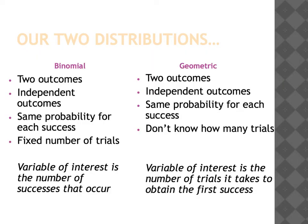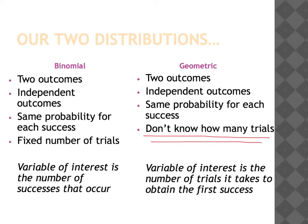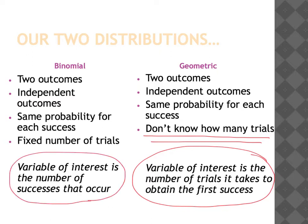We've spent quite a bit of time this chapter talking about the binomial distribution, which has four requirements. In the geometric case, there are similarly two outcomes — failure and success — the outcomes are independent, and we have the same probability for each success. But the big difference is that we don't have a fixed number of trials. Our variable of interest is the number of trials it takes to obtain our first success, rather than the number of successes in a fixed number of trials.